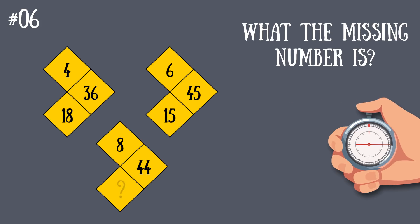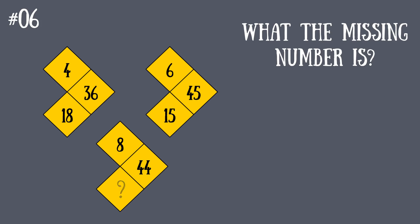Ready or not, it's time to find out the answer. The number on the right in each arrow is the top number divided by 2 and multiplied by the bottom number. To make it a bit clearer, in the first arrow, 4 divided by 2 is 2; 2 multiplied by 18 is 36.